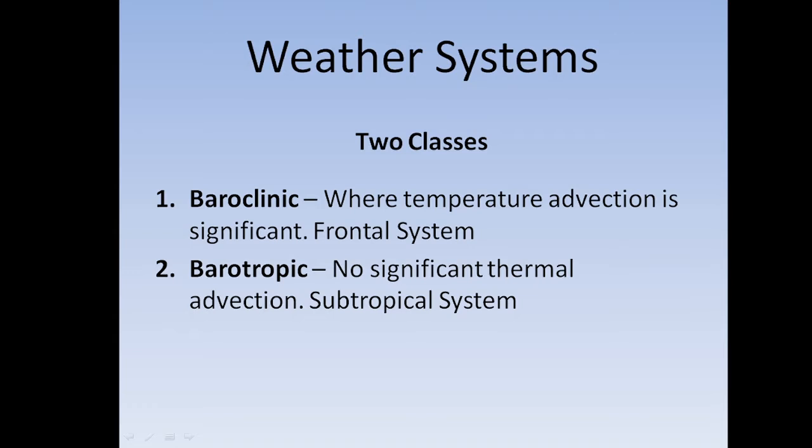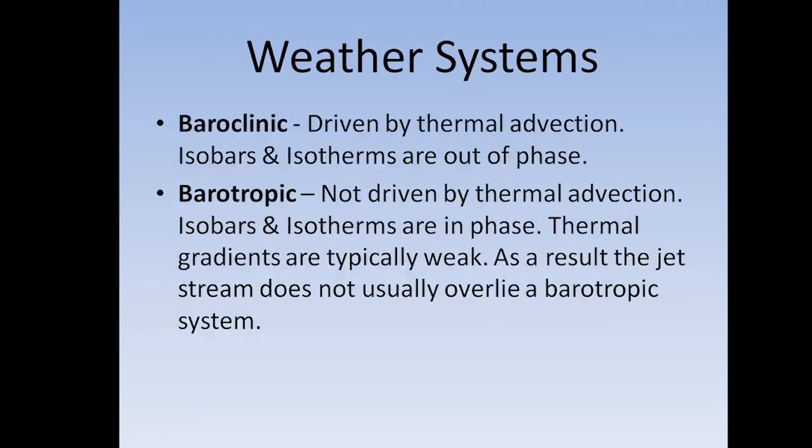Baroclinic is where thermal advection is significant, and it's usually associated with a frontal system. Barotropic has no significant thermal advection, and an example of that is a subtropical system such as a hurricane or a subtropical high. Baroclinic is driven by thermal advection — that's what makes it baroclinic.